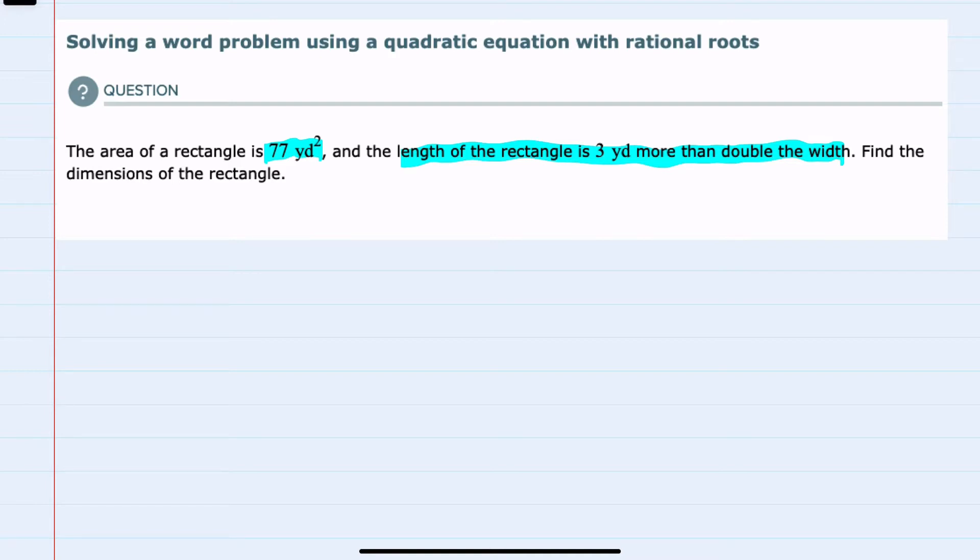So first, since we're talking about the area of a rectangle, we should recall that the area of a rectangle equals its length times its width. And from this example we can see that the area is 77, and that the length is 3 yards more than double the width. So we don't know what the width is, so I'll call that x.